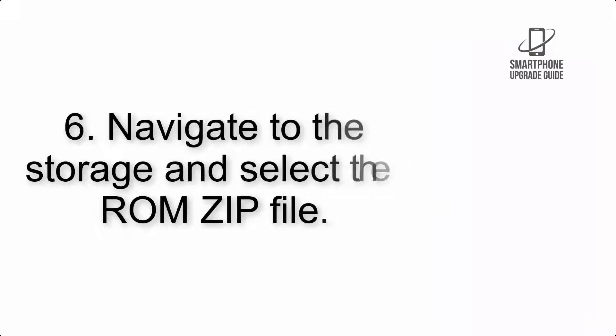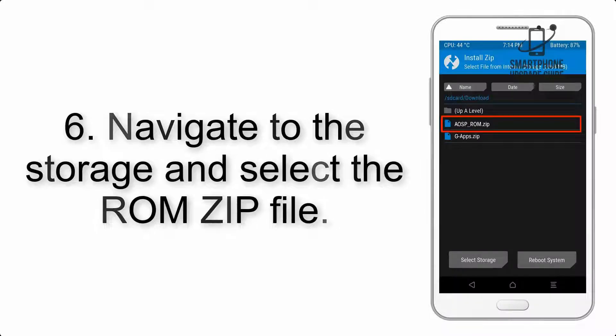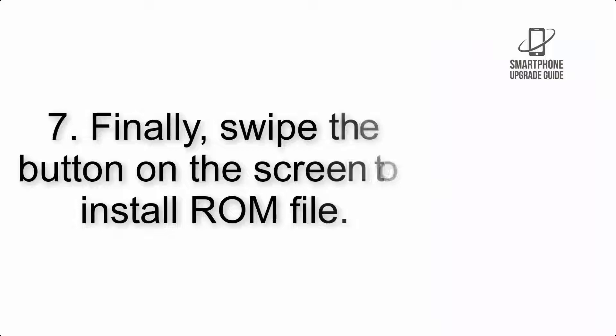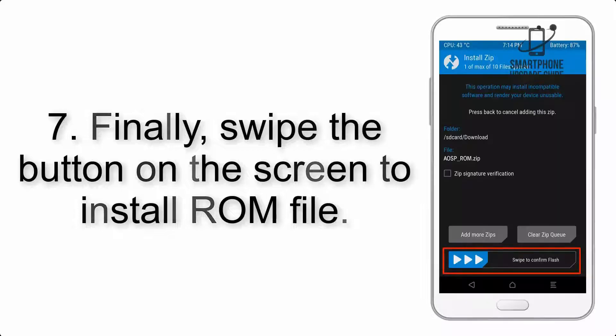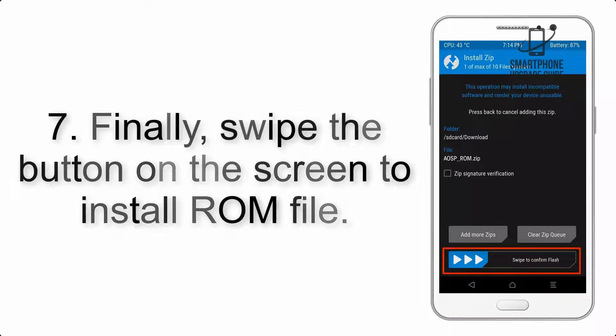Step 6: Navigate to the storage and select the ROM zip file. Step 7: Finally, swipe the button on the screen to install the ROM file.